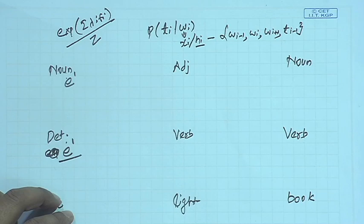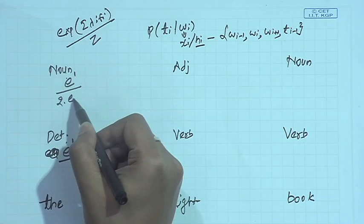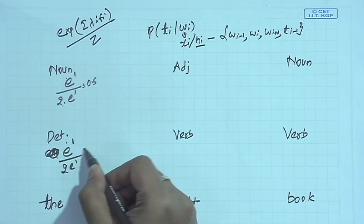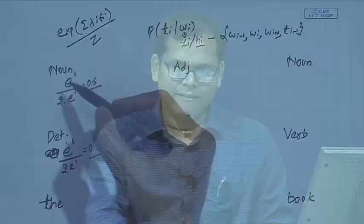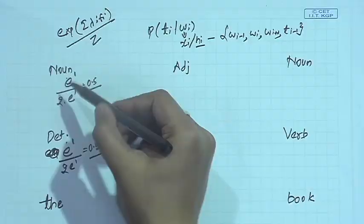The normalization gives 2e divided by 2e, so both determiner and noun get a probability of 0.5. Since we are using a beam size of 2, we keep both tags. We now have two tag sequences, each with probability 0.5, and we move on to the next word, 'light'.